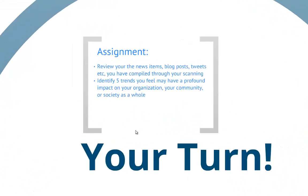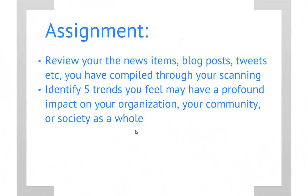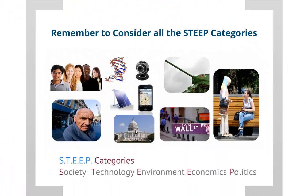All right, now it's going to be your turn. Your assignment is to review your scanning — the news items, blog posts, tweets, etc. that you've been compiling in the course of your project — and skimming over and synthesizing that information, identify five trends you feel may have a profound impact on your organization, your community, or society as a whole. Remember to think about all the STEEP categories: it could be a cultural trend, technology, economic, and you will be filling out your trends worksheet based on that content. I look forward to seeing what you submit.